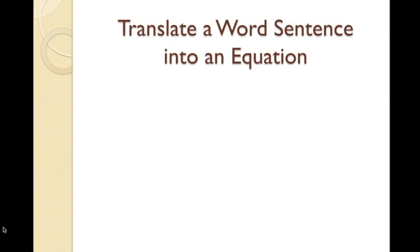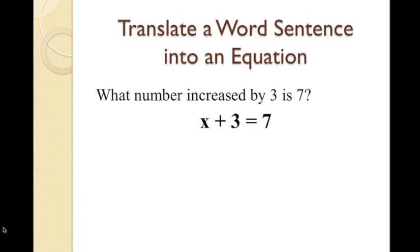Here we will practice translating a word sentence into an equation. Our first example is: what number increased by 3 is 7? Observe that we are looking for an unknown number that when we add 3, because 'increased by 3' means plus 3, it will equal 7. Therefore, we write it as x plus 3 equals 7.